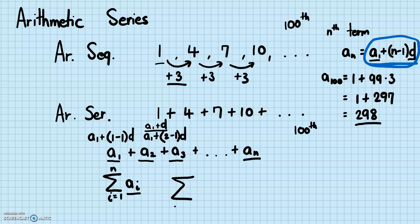So the summation becomes: summation from i equals 1 to n of (a₁ plus (i minus 1) times d). Notice this uses i minus 1, not n minus 1, because the index has to change depending on which term we're on — 1 for the first term, 2 for the second, up to n for the nth term — since we are adding up all the preceding terms, not just the nth term.